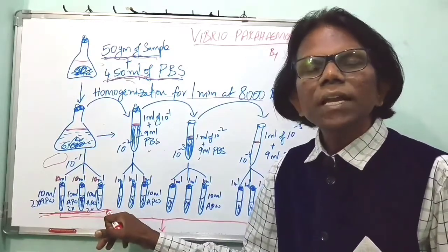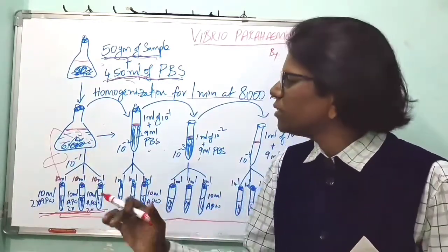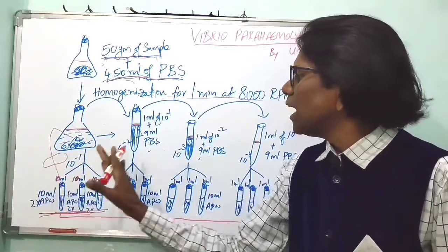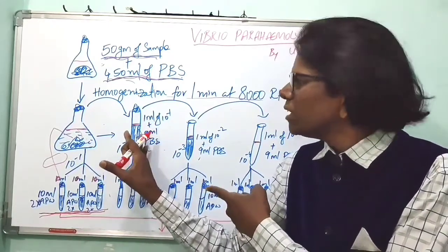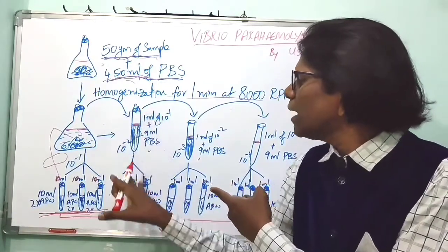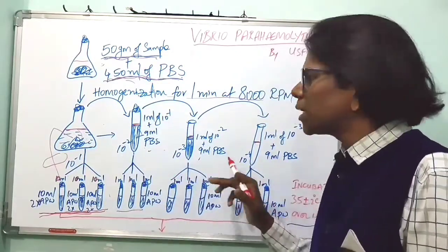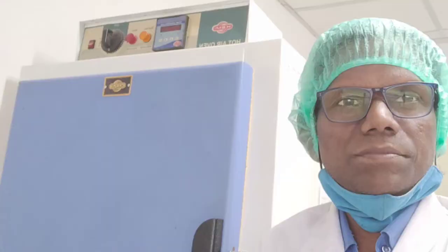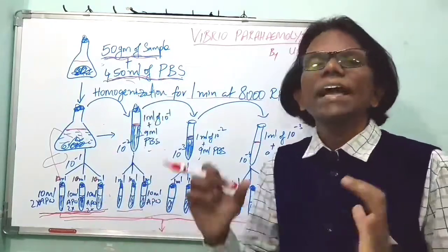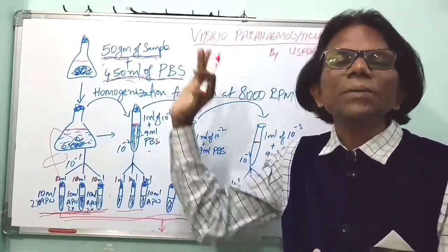Prepare test tubes with 10 ml of double strength APW and add 10 ml of 1 to 10 dilution inoculum into each test tube. For remaining dilutions (1 to 100, 1 to 1000, 1 to 10000), take 1 ml of inoculum and add into 10 ml of single strength APW. After inoculation, keep all these media in an incubator overnight, 16 to 18 hours, at 35°C plus or minus 2°C. This is the primary enrichment or pre-enrichment process.